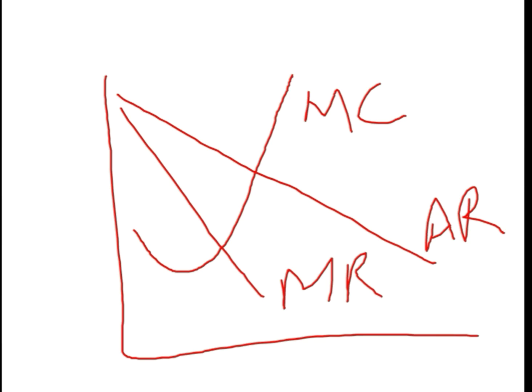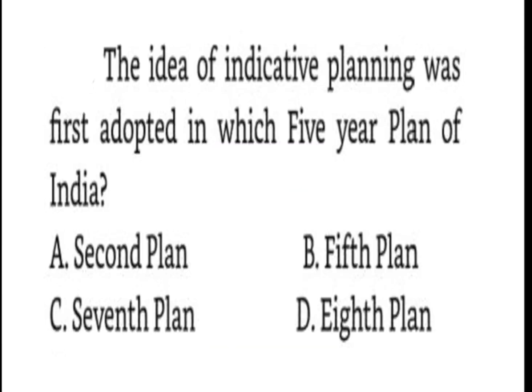The third question is: the idea of indicative planning was first adopted in which five-year plan of India? This question seems easy but we are often confused with indicative planning and inclusive planning. The idea of indicative planning was first adopted in 8th plan, and 8th plan period is 1992 to 1997. Inclusive planning was during eleventh five-year plan.